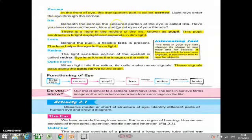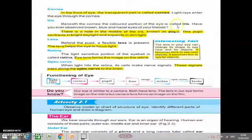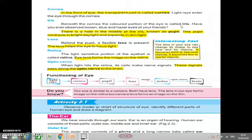Number two is iris. Beneath the cornea, the colored portion of the eye is called iris. Below the cornea, the colored portion is called iris. Have you ever observed brown, blue and hazel eyes of your friend? The colored portion inside your eye, which is black for some, brown for others, or hazel color. This portion is called iris.